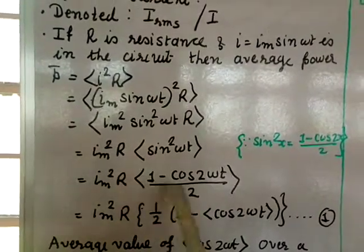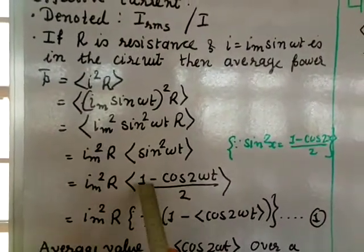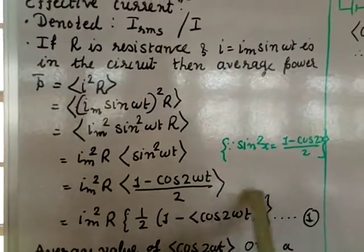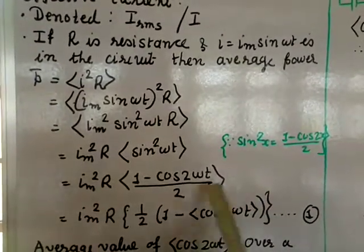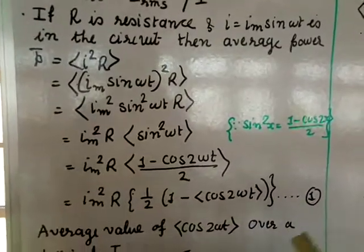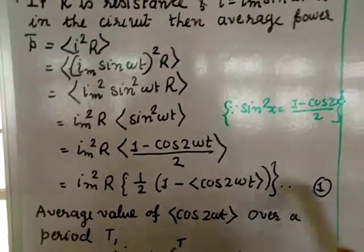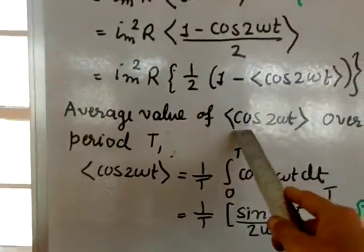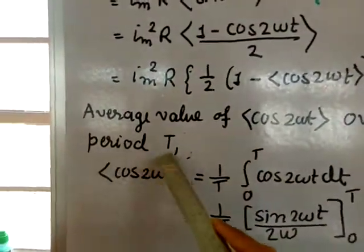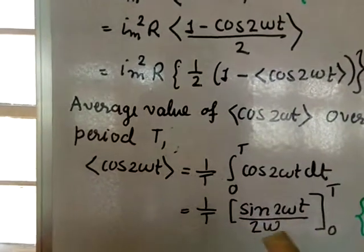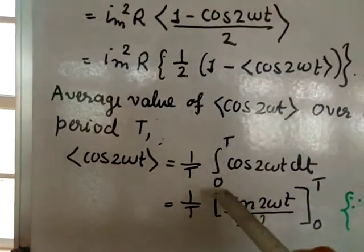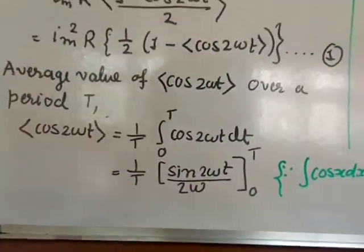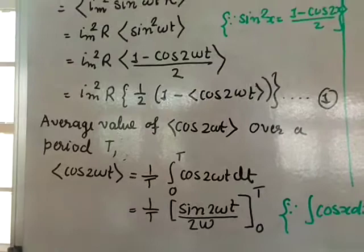Taking 1/2 as a common factor, we need the average of (1 − cos 2ωt) over one complete cycle, that is from time 0 to T. Call this equation 1. The average value of cos(2ωt) over a period T is (1/T) · ∫₀ᵀ cos(2ωt) dt.